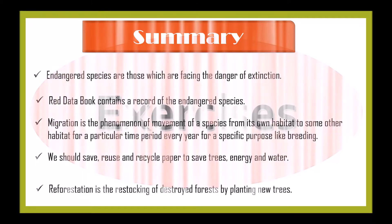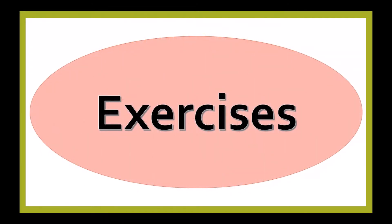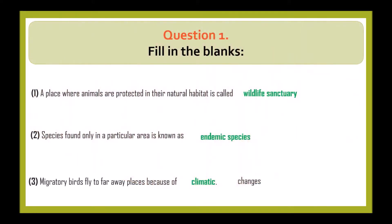Now let's solve the exercise of the textbook. Question 1: Fill in the blanks. A place where animals are protected in their natural habitat is called a wildlife sanctuary. Species found only in a particular area are known as endemic species. Migratory birds fly to far away places because of climatic changes.